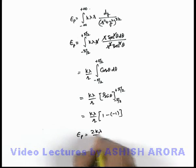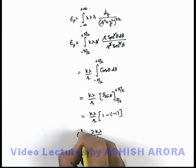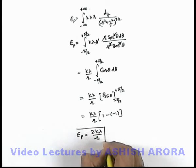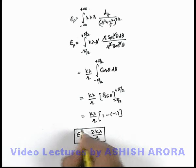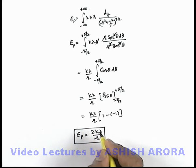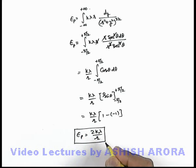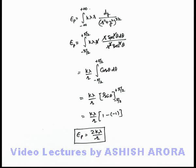So the result of E_P is 2k·lambda divided by r. That is the electric field strength due to a uniformly charged long thread at a distance r from it.